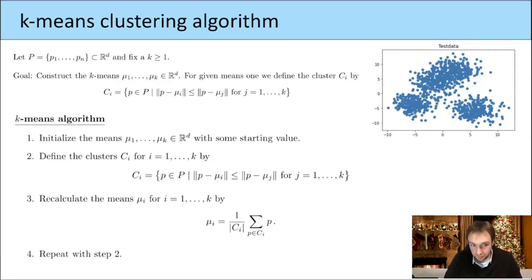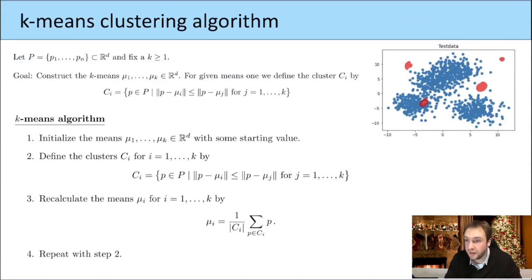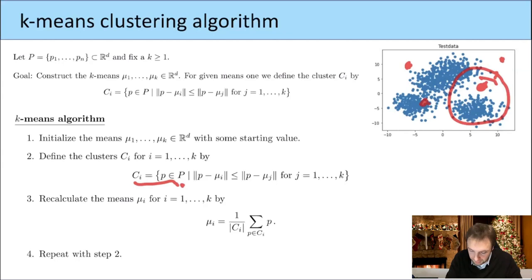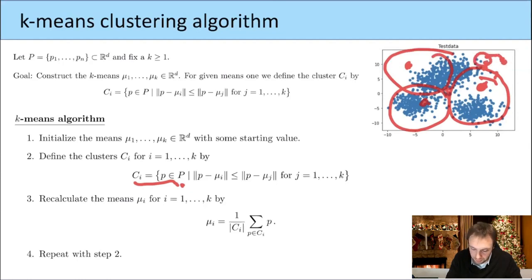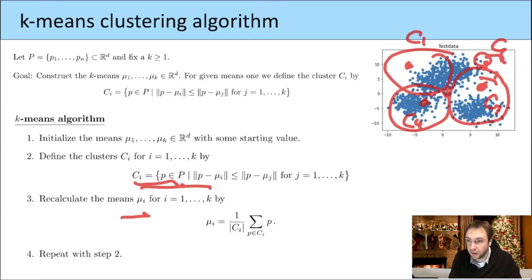The algorithm is quite simple. First we start by choosing any initial means. Then we always do the following: given fixed means, we calculate the corresponding clusters. Then we recalculate the mean by taking the average of all points in each cluster. This gives new mus. Then we start again and do it again and again.